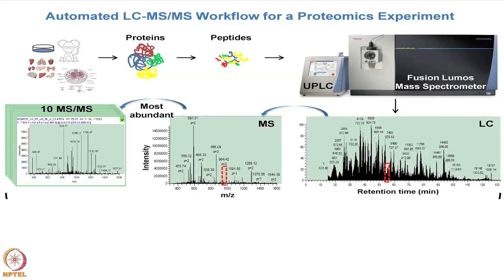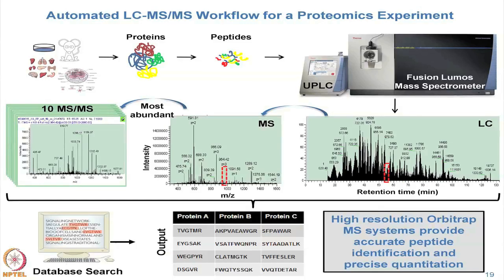Today this cycle can happen in a second. The huge collection of spectra generated automatically is then put into a software program that assigns peptide sequences to each mass spectrum. Additional software takes the peptides belonging to the same protein, and you get out a list of proteins observed along with all the peptides identified.